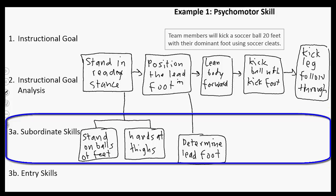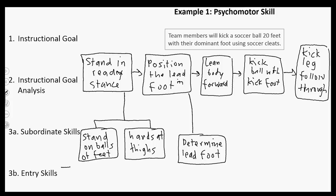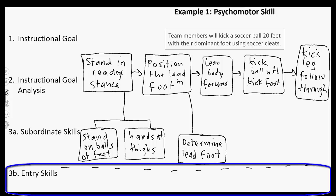These are things learners still need to learn how to do. Now there are also skills they already have — skills they need to know before they come to the training. I'll draw a dotted line to differentiate between subordinate skills and entry skills. For standing on the balls of your feet, we're going to assume these team members can already stand without falling — that's an entry skill.